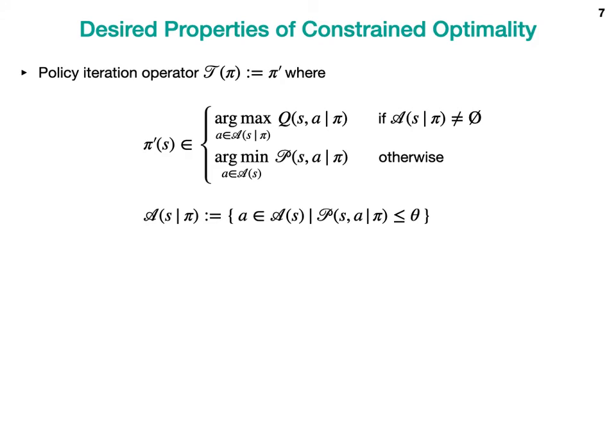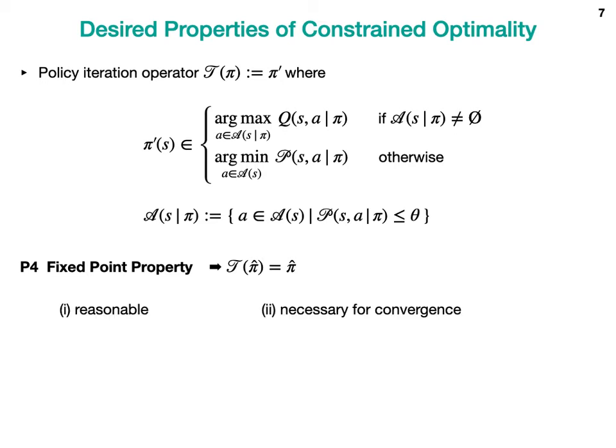Consider the policy iteration operator, which takes policy Pi and outputs policy Pi-prime that maximizes the Q function among the safe actions under Pi — denoted A(s) under Pi — and if no safe action exists, minimizes the reachability. Our fourth property P4 is that the optimal policy must be a fixed point of such an operator. This property is reasonable since the operator maximizes performance in the safe region and minimizes risk in the unsafe region, and it is also necessary for convergence of reinforcement learning.